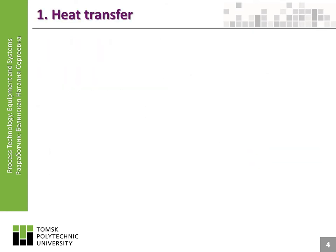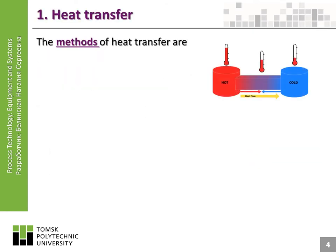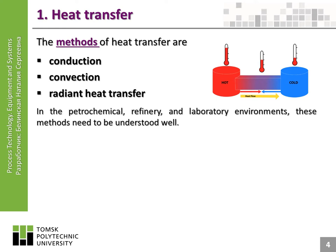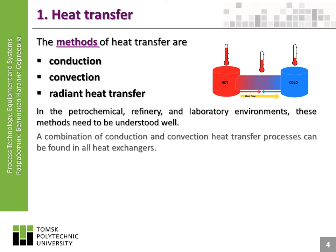Heat transfer. The methods of heat transfer are conduction, convection, and radiant heat transfer. In the petrochemical, refinery, and laboratory environments, these methods need to be understood well. A combination of conduction and convection heat transfer processes can be found in all heat exchangers.